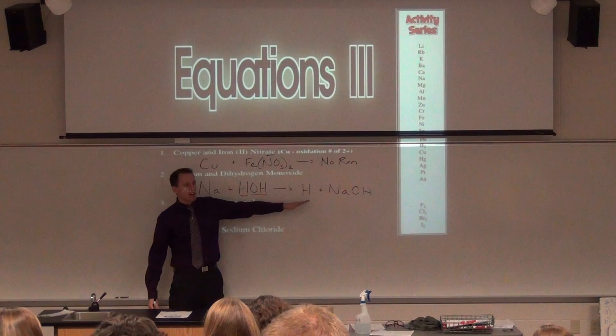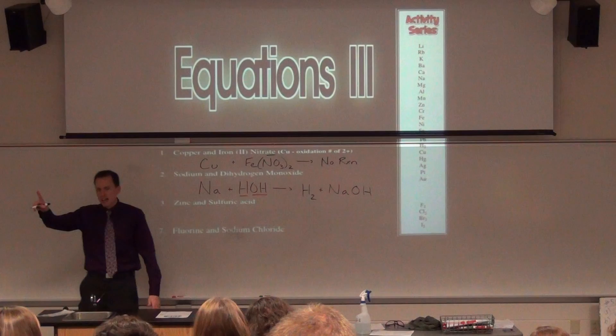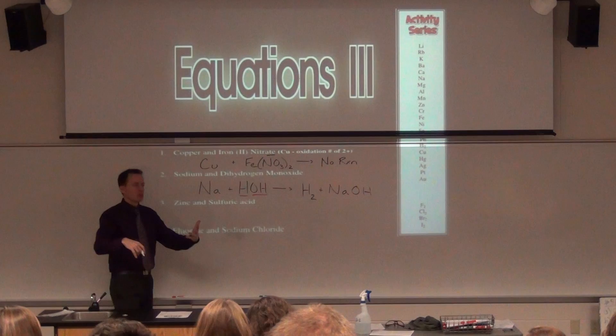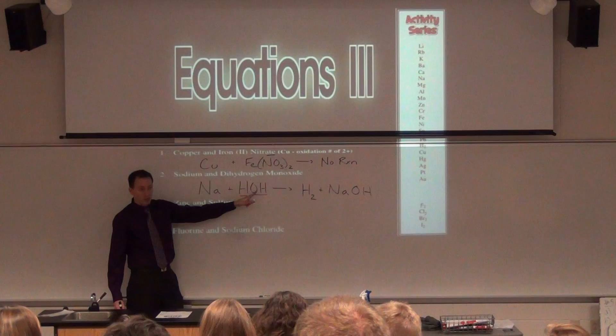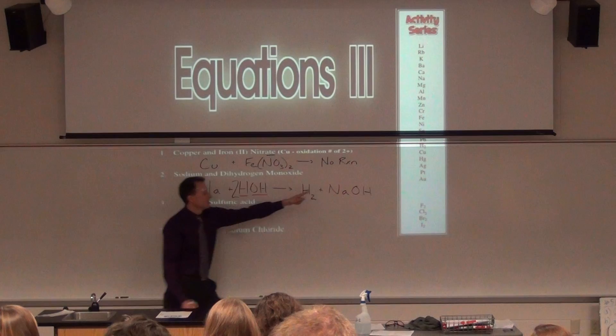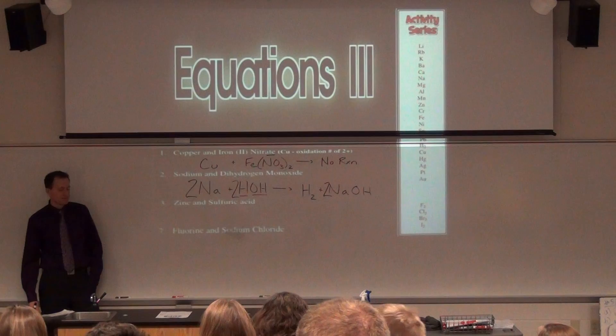Every time I write an element by itself, ask: is it a diatomic? The list tells me yes, it's H2. Every time I make a new compound, check the charges. Na is +1, OH is −1 (from your polyatomic ion sheet) — plus 1, minus 1, done. Balancing is easier with HOH: I have two H's in H2 but only one H from HOH. So I put a 2. Now I have two OHs, so I put a 2. Now I have two Na's, so I put a 2. If you write it as H2O it's not as clear.